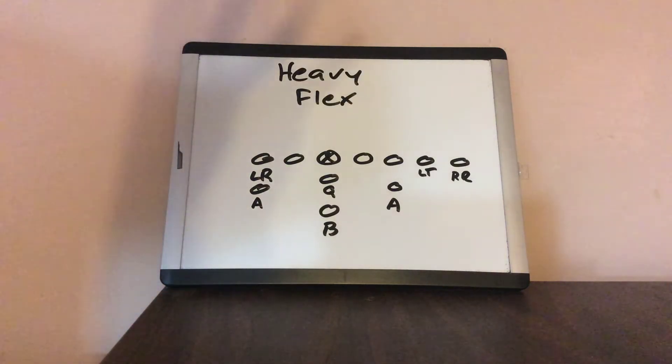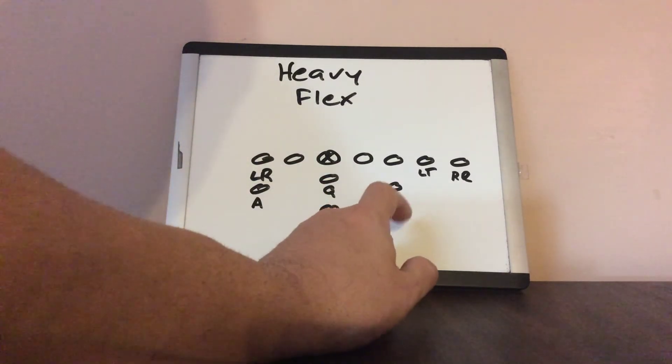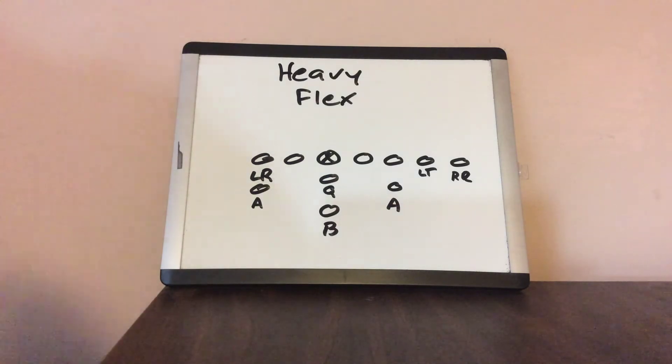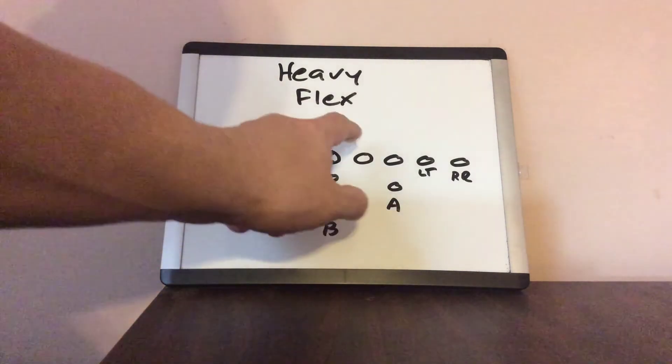If they want to run the belly G out of this, the A-back will move behind the heavy tackle, but that's about it. The reason why you run this is you create an A gap, a B gap, a C gap, a D gap, and an E gap.